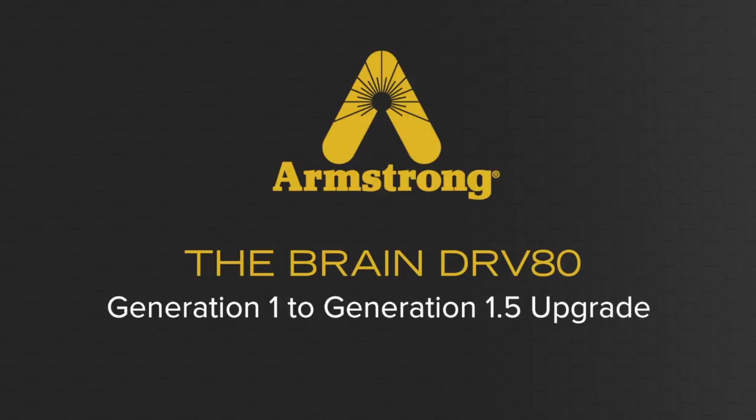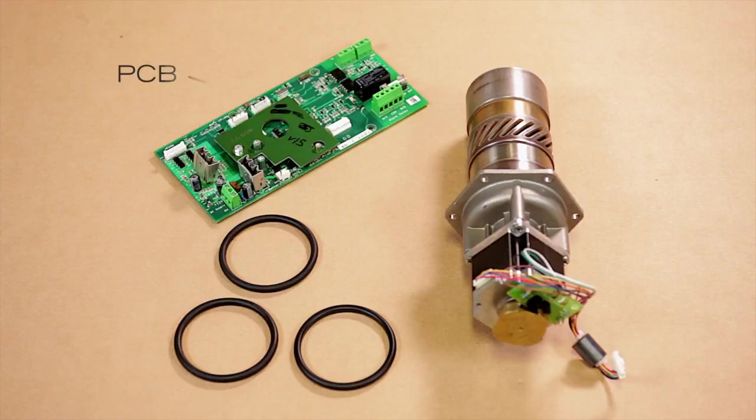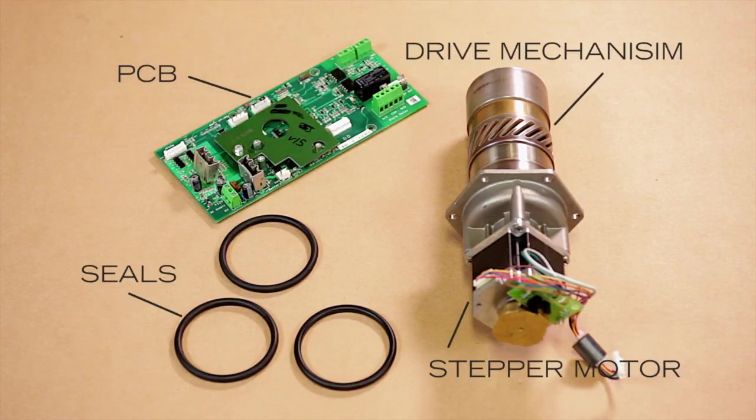This service video will take you through the process of a generation 1 DRV80 to generation 1.5 upgrade. During the upgrade process, the parts shown here - the PCB, drive mechanism, stepper motor, and seals - will all get replaced.